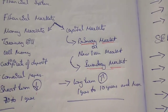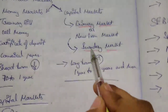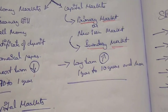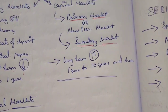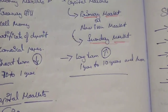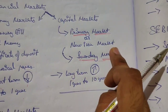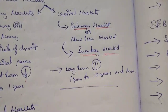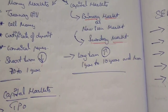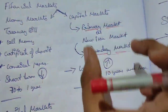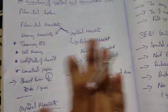Secondary market is where secondhand securities — those shares and debentures which have already been issued — are traded. In the primary market, fresh issue is done, so it is also called the new issue market. In secondary market, secondhand securities are sold, and brokers are involved. SEBI guidelines will be covered more as we go along.